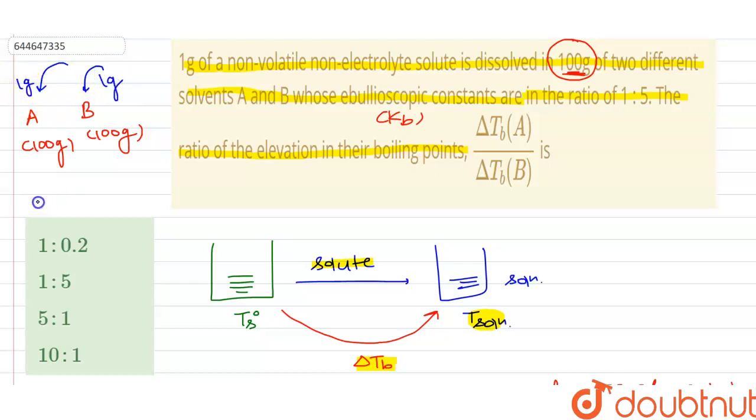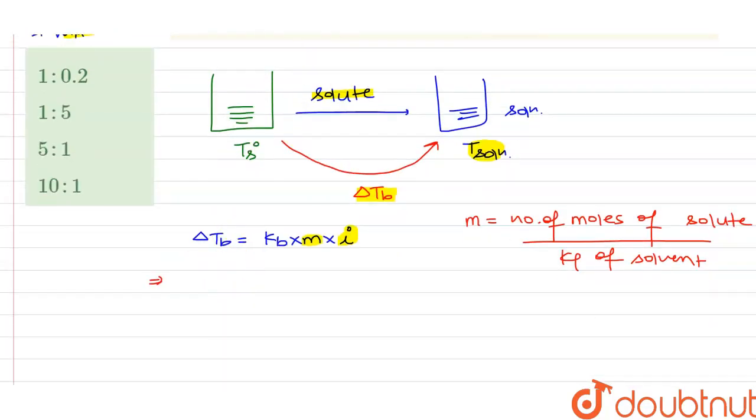From here we can easily say that the molality of both solutions will be the same, that is mA = mB. Now if you try to write the separate formulas for